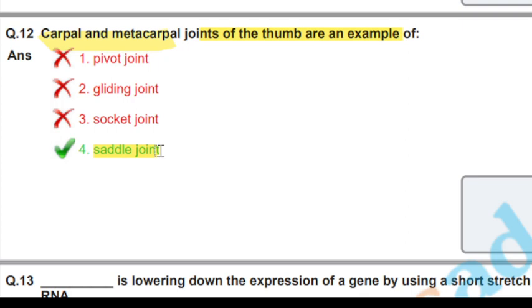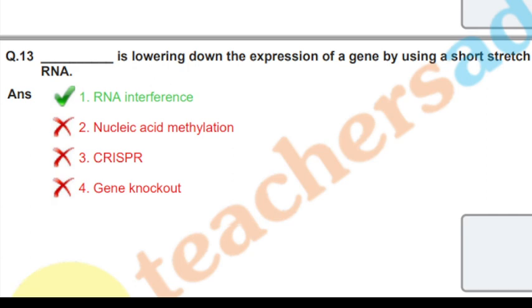This is lowering down the expression of a gene by using a short stretch of RNA. The answer is RNA interference. RNA interference is the mechanism that lowers gene expression by using short stretches of RNA. This mechanism is covered in detail in the molecular basis of inheritance chapter.